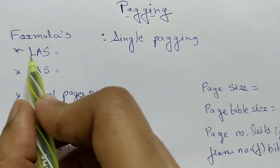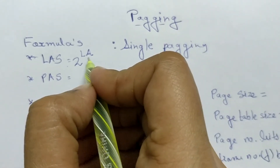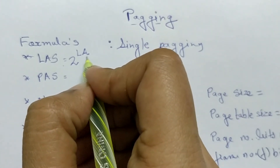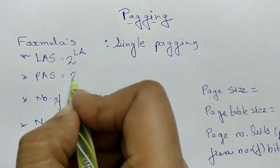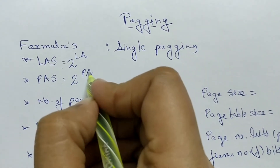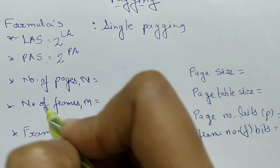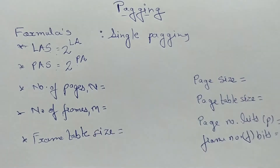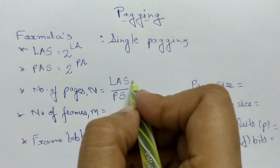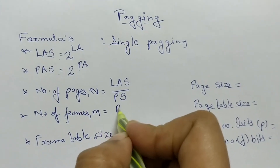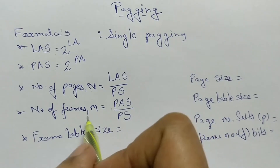The first formula is logical address space, which is given by 2 to the power of the logical address, where the logical address is denoted by the number of bits. If the question asks what will be the size of the address bus, it should be the number of bits for the logical address space. Next is physical address space, given by 2 to the power of the physical address. The number of pages, capital N, is given by logical address space divided by page size. Logical address space gives you the number of pages, whereas physical address space gives you the number of frames.